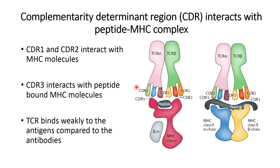This is the diagrammatic representation of the T cell receptor with class I MHC and class II MHC. CDR1 and CDR2 are interacting with the MHC class I molecule, whereas the CDR3 of alpha and beta are interacting with the peptide. Similarly, for class II MHC molecules, CDR3 is well positioned to interact with the peptide, whereas CDR1 and CDR2 interact with the MHC molecules.